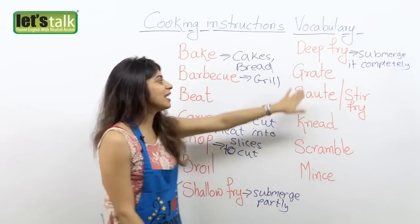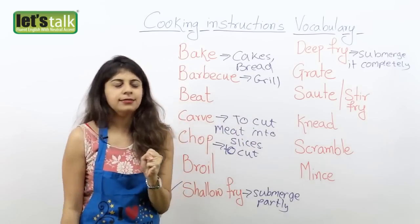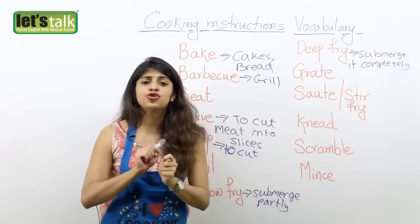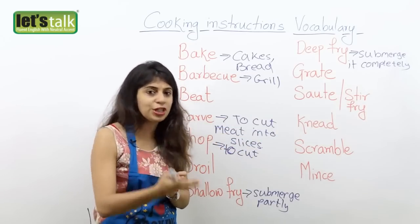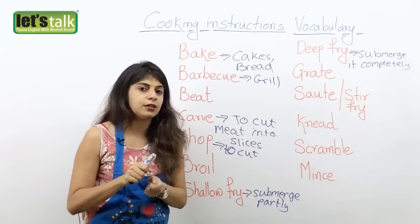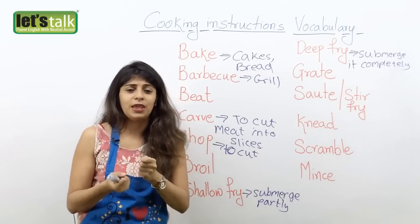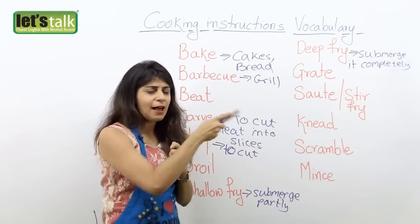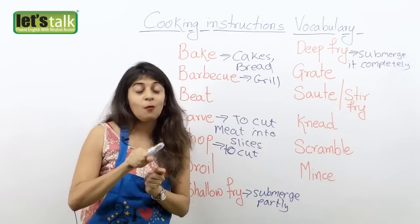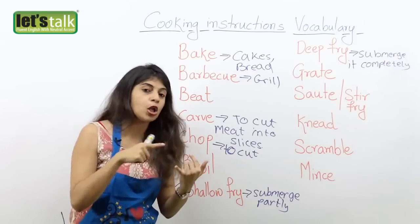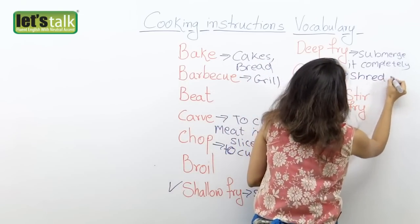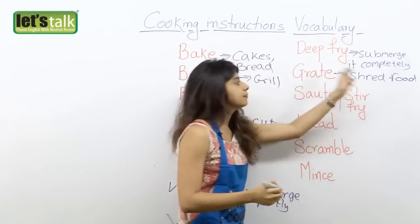Now the next one is grate. Grated cheese — wow, I totally love it. Grate means to shred food items, like cheese or probably chicken. So you shred it with the help of a grater. You know those graters — I wish I had it with me, I could have showed it to you. But maybe you can have a look at this picture here. So grate means to shred food with a shredder or a grater — it's either called a shredder or a grater.